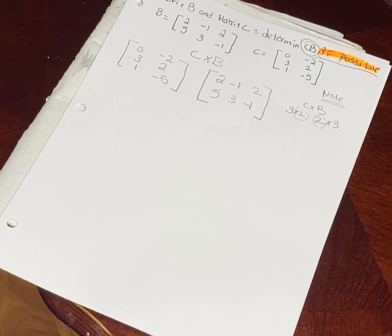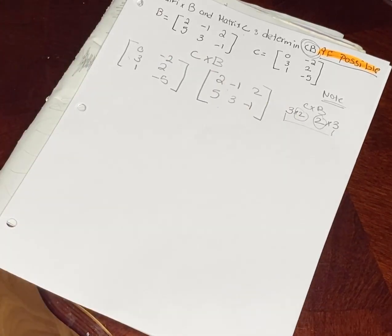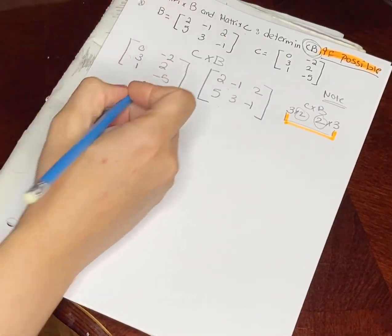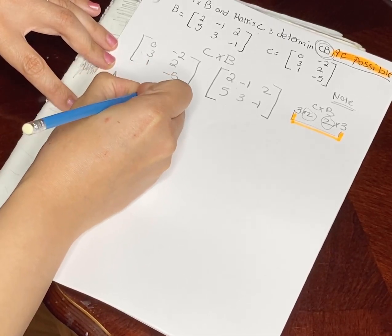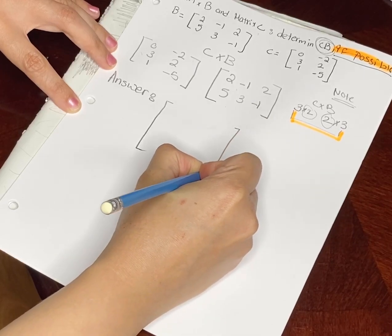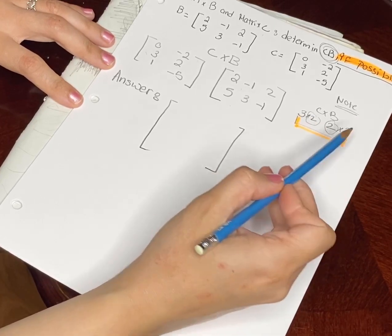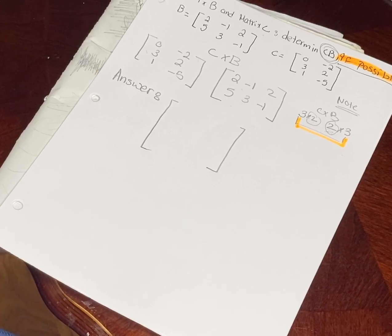Now when we solve it, the answer will be a 3×3 matrix — given by the outer numbers. If those inner numbers were different, it would not be possible to solve this problem. Because they match, we can solve it.